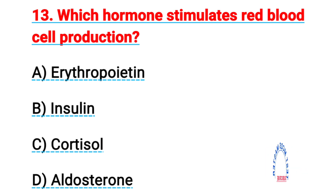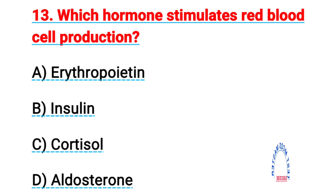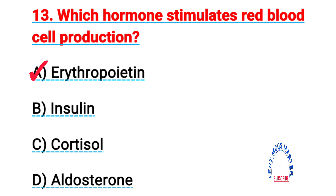Question number thirteen: which hormone stimulates red blood cell production? The right answer is A, erythropoietin.